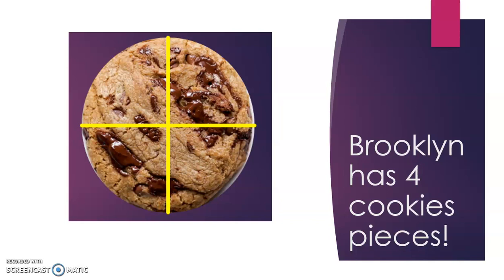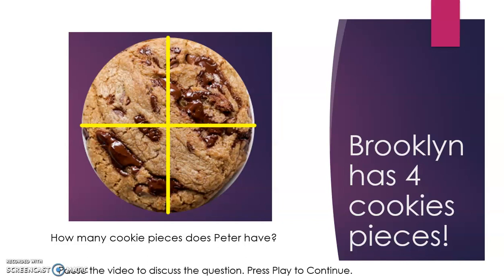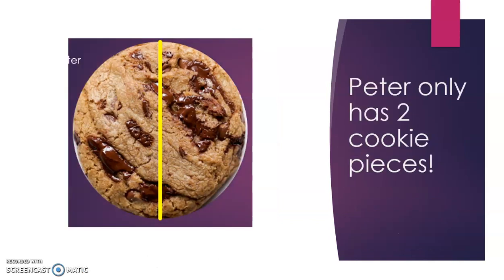Brooklyn has four cookie pieces. Think back to the picture we just saw — how many cookie pieces does Peter have? Pause the video to discuss the question, then press play to continue.